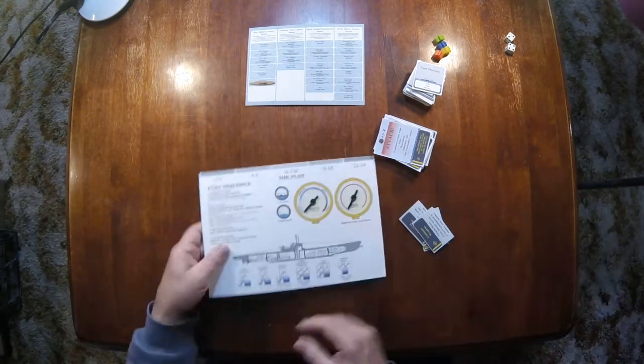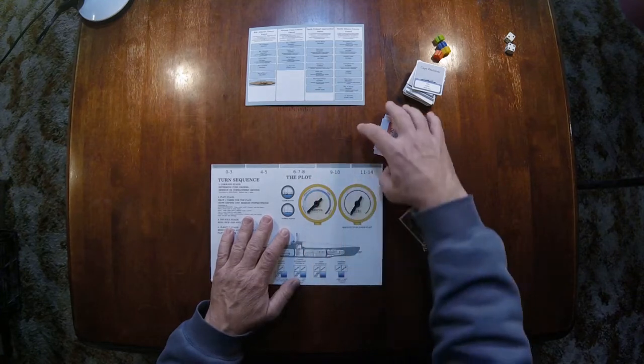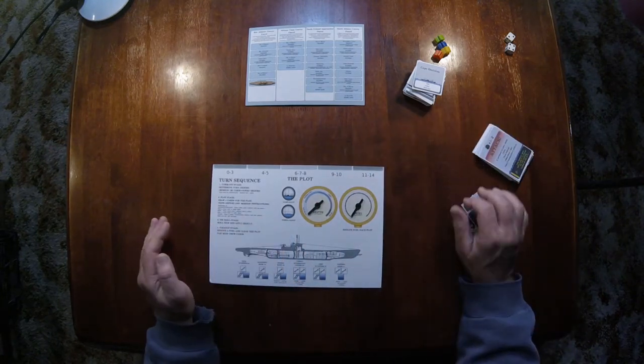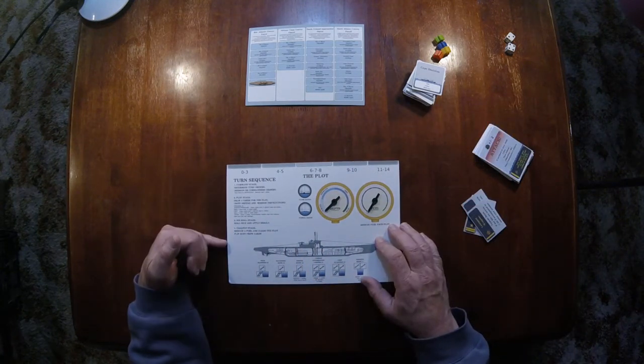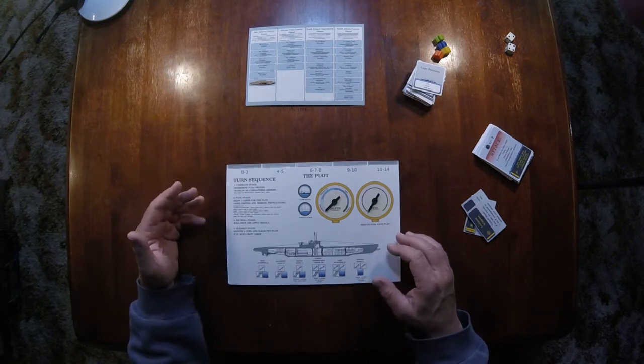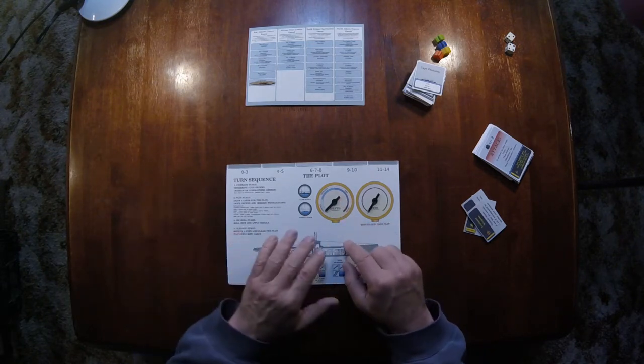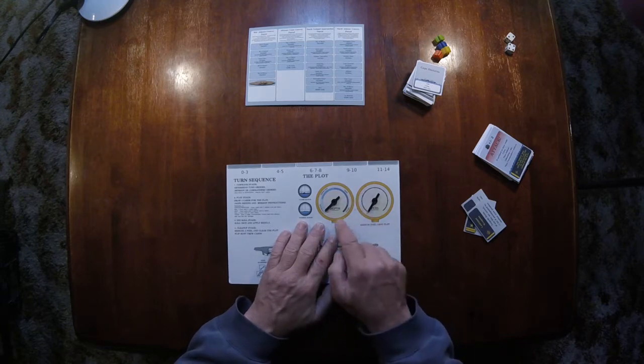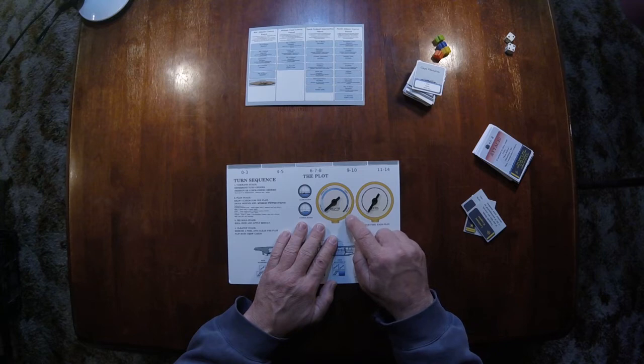Then we also have what I call the plot. The plot is where the skipper runs the ship. There's a turn sequence here. At the beginning of the turn sequence, the skipper can raise or lower the submarine one depth. So you can see we have surface, periscope depth, deep depth, and crush depth.